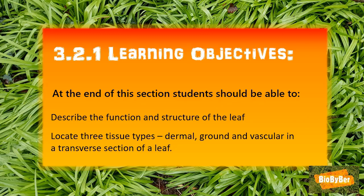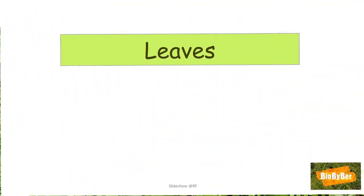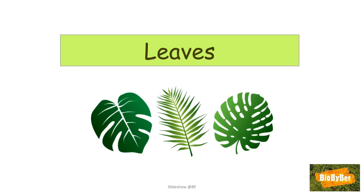Let's start by looking at the learning objectives for this lesson. Following the biology syllabus, you should be able to describe the function and structure of the leaf, and locate three tissue types — dermal, ground, and vascular — in a transverse section of a leaf. You have to be able to identify these in a cross section of a leaf.